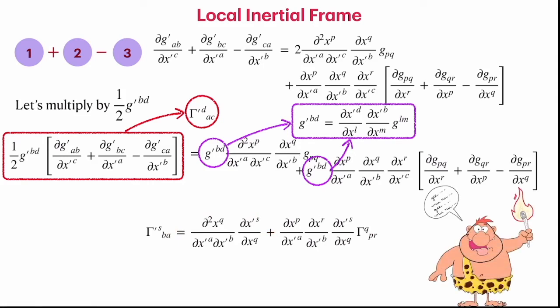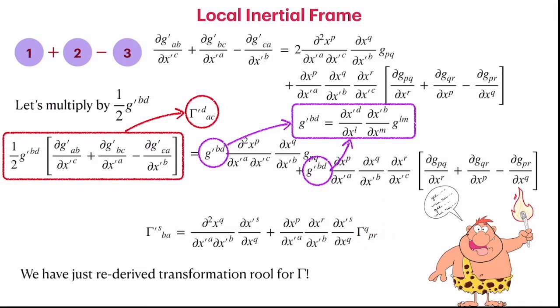This is a major result. We have obtained the transformation rule for the connection coefficient or Christoffel symbol. The Christoffel symbol gamma does not transform like a tensor. If it had three indices and transformed as a tensor, the rule would contain only the Jacobian factors. Instead, there is an extra term — a second derivative of the coordinate system — confirming that gamma is not a tensor.